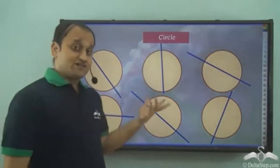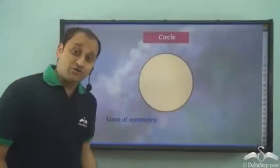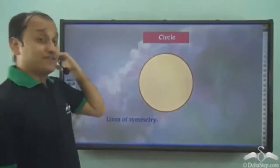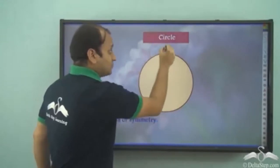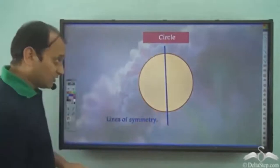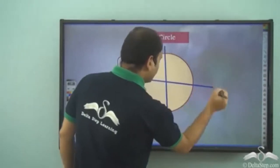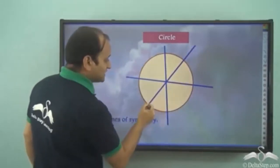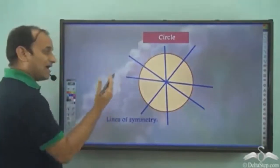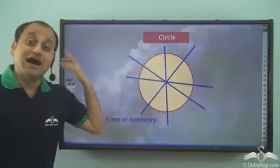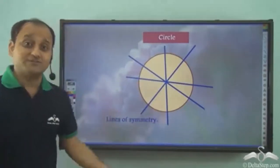All these are lines of symmetry for a circle. In the case of a circle, you can have an uncountable number of lines of symmetry, because the only criteria is that the line should pass through the center. If you have a line passing through the center of the circle, it will give you a line of symmetry. You can have any number of such lines — the only criteria is that they pass through the center.